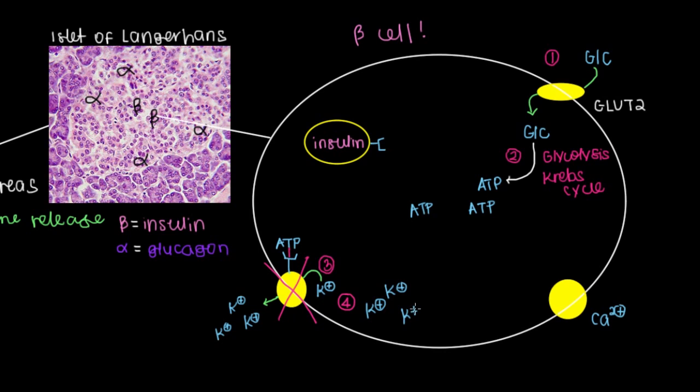So you'll have a lot more potassium or a lot more positive charge inside of the cell than you have relative to what's outside. And what that's going to do is cause depolarization. Depolarization of the membrane of the beta cell.